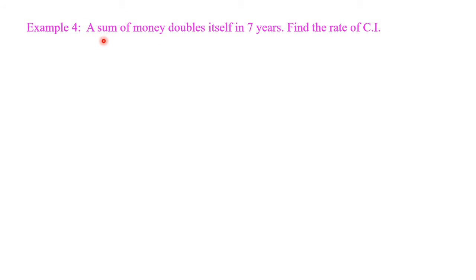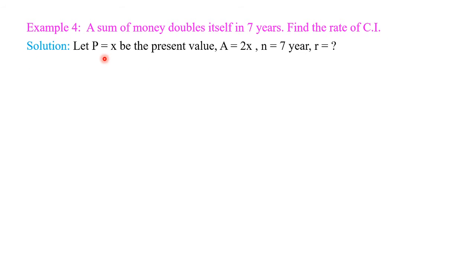Example number 4: A sum of money doubles itself in 7 years. Find the rate of simple interest. In this example, we have to find the rate of compound interest. The given information: a sum of money doubles itself, therefore amount A is equal to 2x. In 7 years, so n is equal to 7. Let P equal to x be the present value, then A is equal to 2x, n is equal to 7, and r is equal to question mark — we have to find the rate of interest.